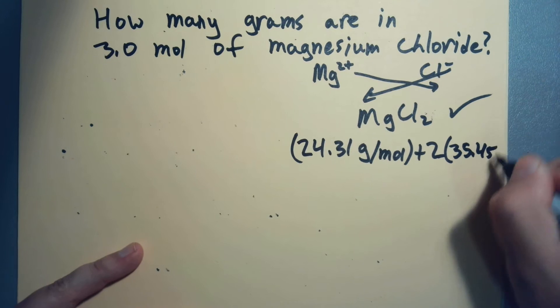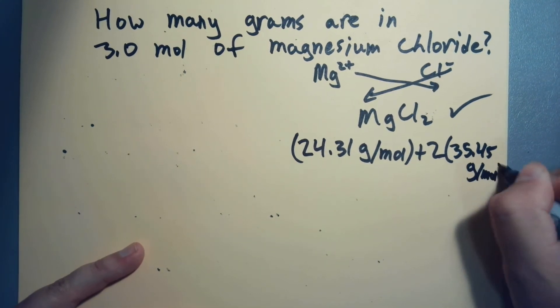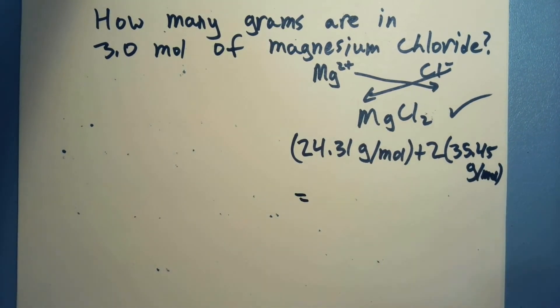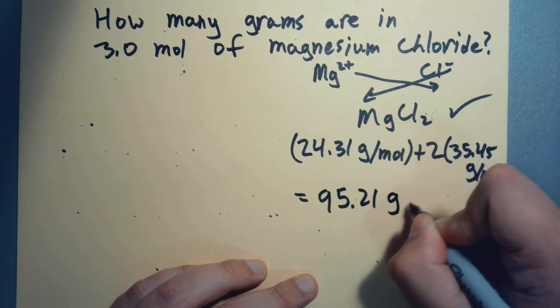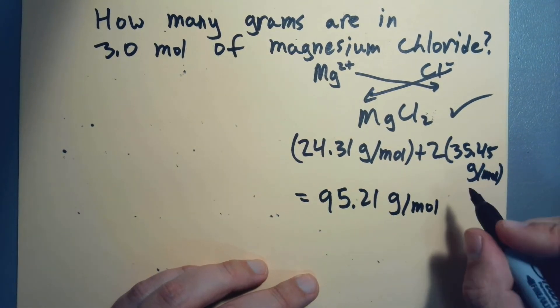We're going to get that all totaled up, so we go two times 35.45 plus 24.31, and we get 95.21 grams per mole, because my Windows calculator would never betray me.